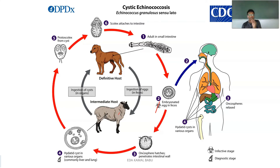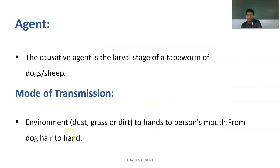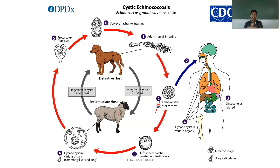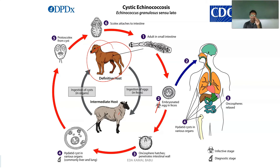A man gets affected whenever he is consuming the meat of a sheep, or whenever he is playing with dogs, since the dog is already infected. The disease also comes directly from dust, grass, and dirt. The embryonic pieces present in the environment, which came from the dogs, infect human beings as well. The human being ingests the embryonated egg through feces.